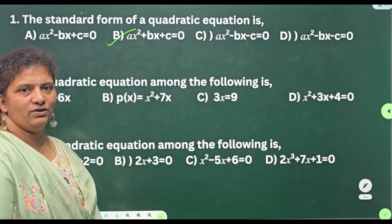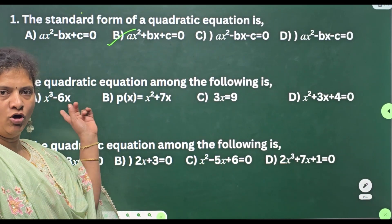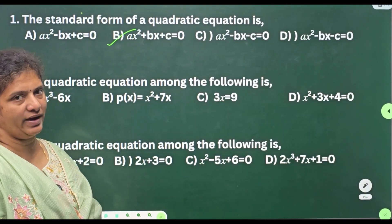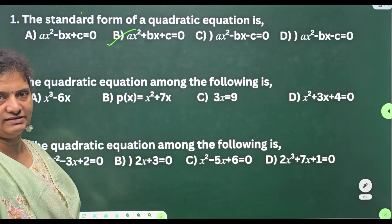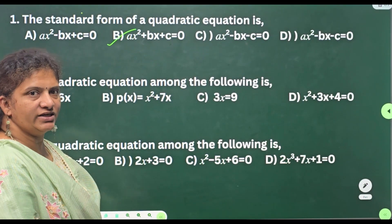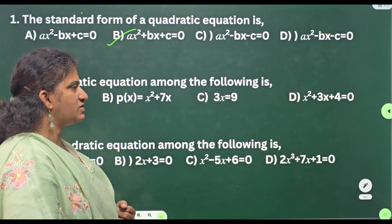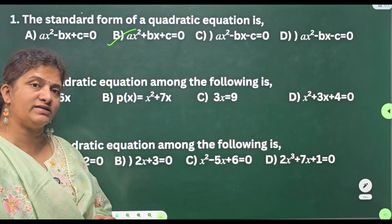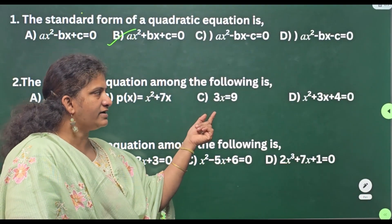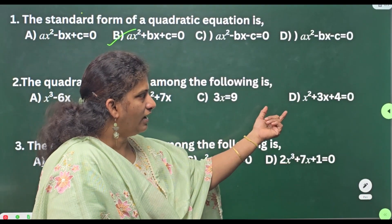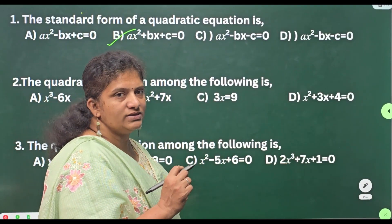Observe that — option B. Second one: the quadratic equation among the following is — among these four options, which is a quadratic equation? First one: x³ − 6x, it is a cubic equation, it is not a quadratic. P(x) = x² + 7x — P(x) means polynomial of x, it is not a quadratic. And here 3x = 9 is a linear equation.